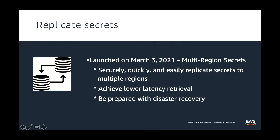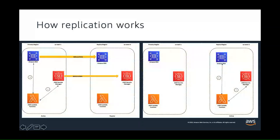We launched replicate secrets, and here's an example of how this works in a customer DR scenario. The primary region is US East 1 and the replica region is US West 2. Replication is turned on for the DB as well as in AWS Secrets Manager. In the normal scenario, the Lambda function — which is the application — retrieves the secrets from Secrets Manager and connects to the RDS DB. In a DR scenario, the DB fails over to US West 2. The secret is already replicated there, so as part of your failover script, the database CNAME record is updated to point to the database in the replica region. The application in US West 2 can then use the replicated secrets to access the database.